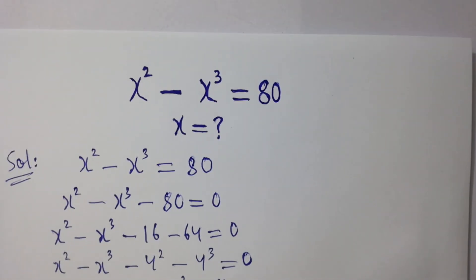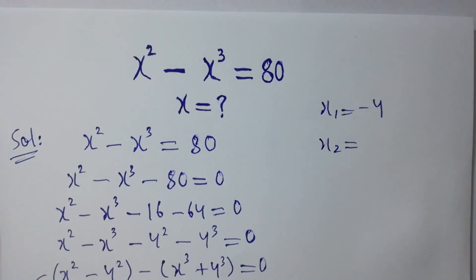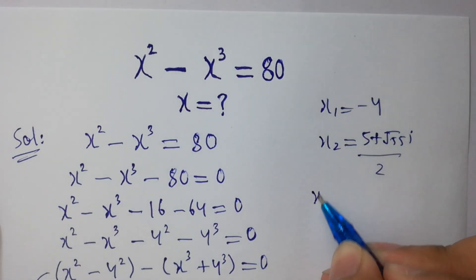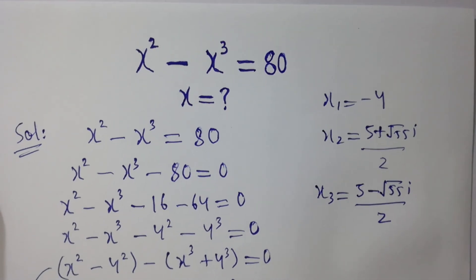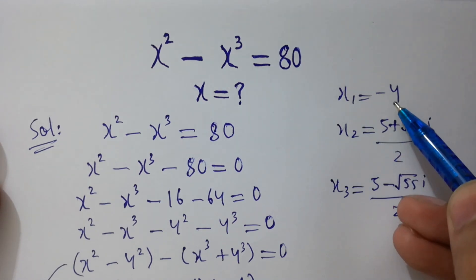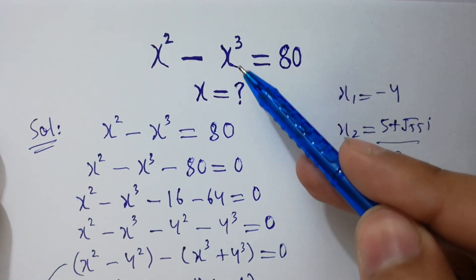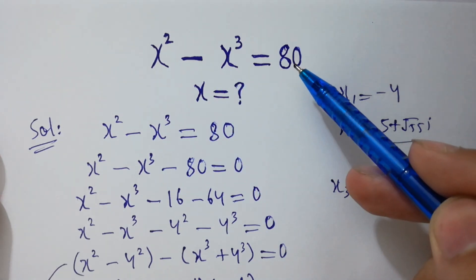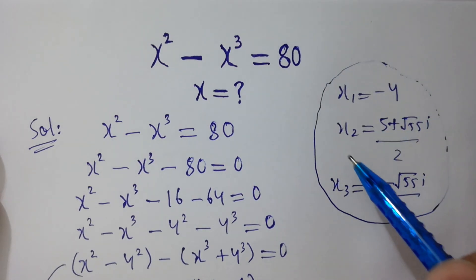This is the first solution: x1 equals minus 4. x2 equals 5 plus root 55i, divided by 2. And x3 equals 5 minus root 55i, divided by 2. Now check: x squared minus x cubed equals 80. Putting x1 equals minus 4: minus 4 squared is 16, minus 4 cubed is 64, so 16 plus 64 equals 80. This confirms x equals minus 4 is correct.